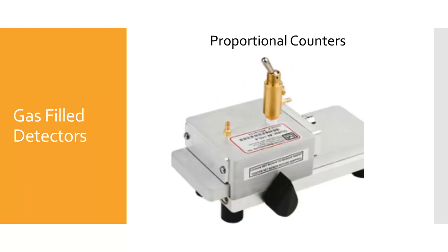Proportional counters are another type of gas-filled detector. This device uses a similar process to the Geiger-Mueller tube in that once the electron is ejected, it propels other electrons out of their shells through a chain reaction, called the cascade effect. The proportional counter can distinguish between alpha and beta radiation and is used to assess small amounts of radiation.